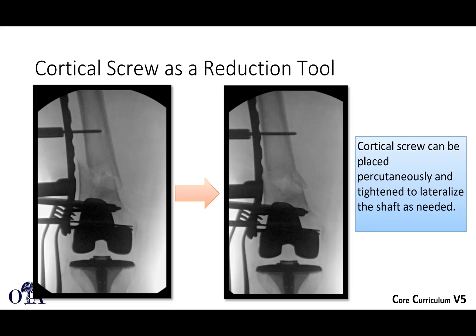A cortical screw can also be used as a reduction tool. If the plate is properly positioned and contoured to the desired reduction, you can achieve indirect reduction during the minimally invasive plating process. Assuming the plate is appropriately contoured, if the fragments are drawn down to the plate, the bone should be properly realigned. Instead of using a locking screw, use a cortical screw to essentially pull the shaft fragment over to the plate and achieve your reduction.